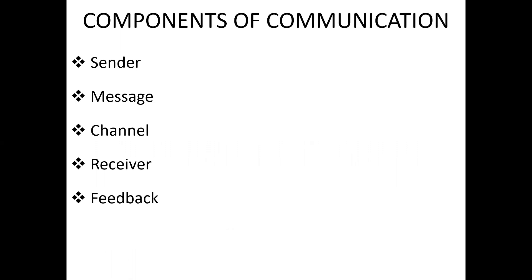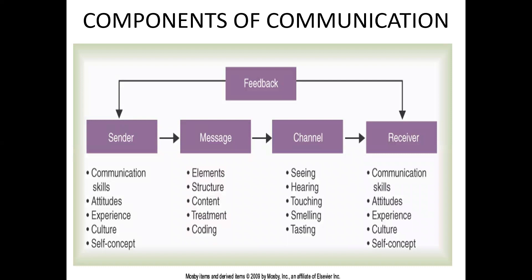Next topic is components of communication. There are five components in communication: sender, message, channel, receiver and feedback. The sender is also known as the encoder or the person who sends the message. The creator of an idea or the message is known as sender, source or encoder. A sender could be an individual, a group, or an individual who might be acting on behalf of a group. The sender acts as the transmitter of the message. It includes communication skills, attitudes, experience, culture, self-concept, etc.